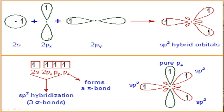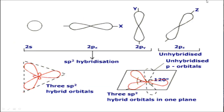In SP2 hybridization, one S and two P atomic orbitals undergo hybridization to give three SP2 hybrid orbitals. This gives a planar triangular structure in which the bond angle between each hybrid orbital is 120 degrees.